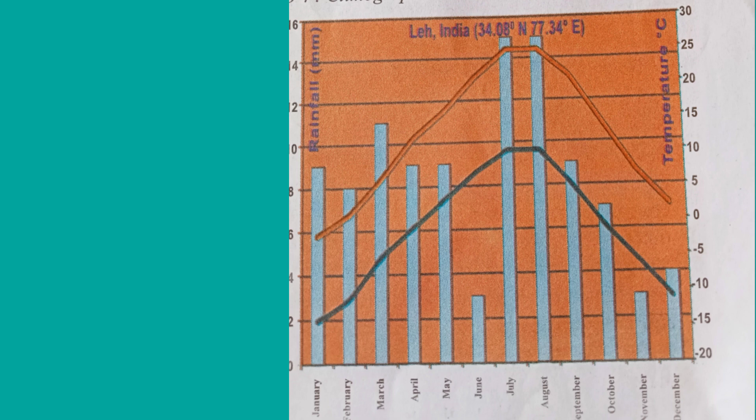The blue bars indicate rainfall. The highest rainfall in Leh is in July and August — that is 15 mm. The lowest rainfall months are October, with 7 millimetres, and November, with 3 millimetres. This is the minimum rainfall in Leh.